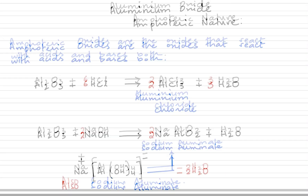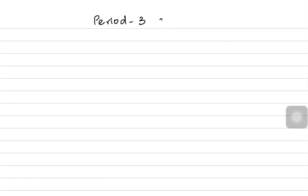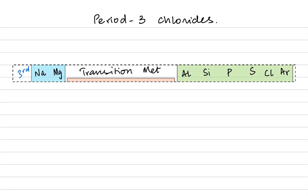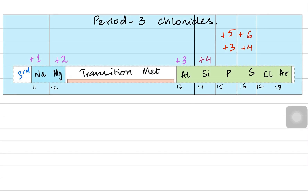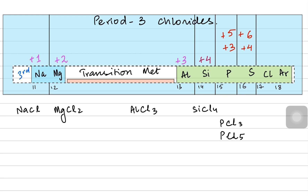Moving on, we're going to talk about period three chlorides. We have the period three elements with their oxidation states. Using the oxidation states to work out the chemical formulas of their chlorides: sodium chloride, magnesium chloride, aluminium chloride, silicon tetrachloride, phosphorus trichloride and phosphorus pentachloride depending on the oxidation state of phosphorus, and sulfur dichloride.